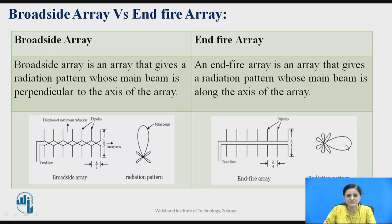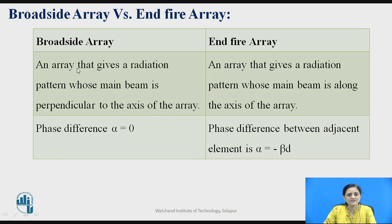Whereas in the end fire array, the major lobe is along the axis of an array. In the broadside array, the phase difference alpha equals 0. Whereas in end fire array, the phase difference is given by minus beta*d, where d is the spacing between each element and beta is the phase shift.